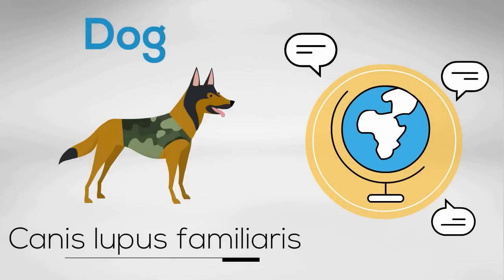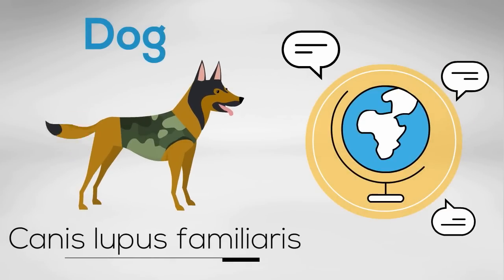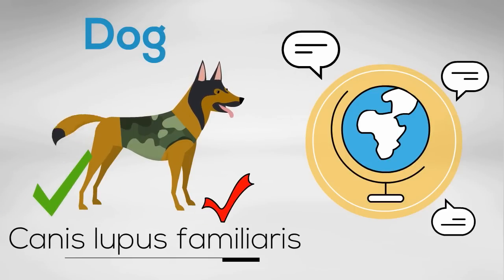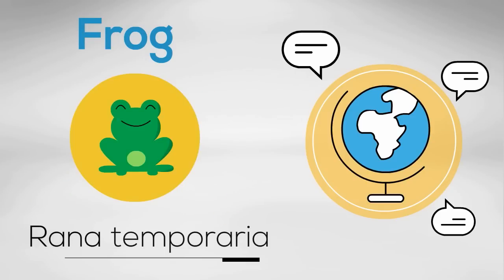A dog's scientific name is Canis lupus familiaris. The genus is Canis and the species is lupus familiaris. How about the frog? There are over 5,000 types of frogs, so the scientific name tells you exactly which one you are talking about. The genus is Rana and Temporaria is the species.